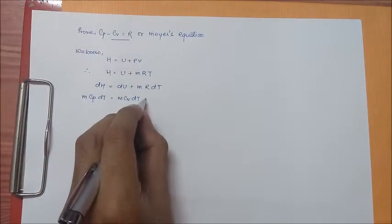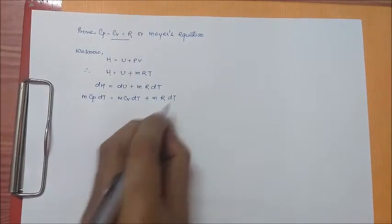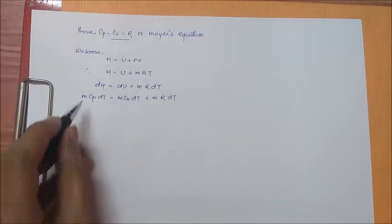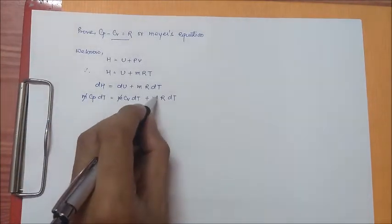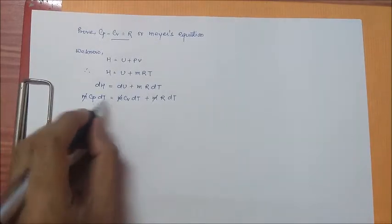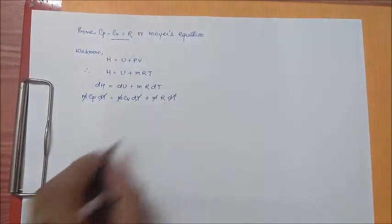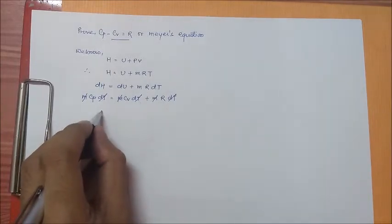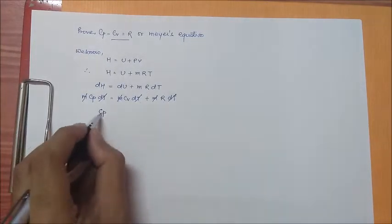Substituting, m cp dT equals m cv dT plus m R dT. As mass we can cancel out from both sides, dT we can also cancel out from both sides. The only thing left out, the left hand side is cp and on the right hand side is cv plus R.